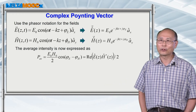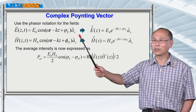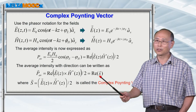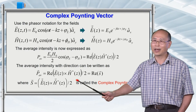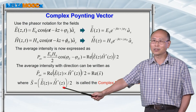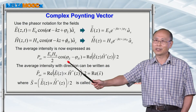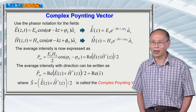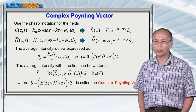For electromagnetic radiation, the propagation direction of energy is also important. We therefore define the complex Poynting vector as one-half of the phasor of E crossed with the complex conjugate of the phasor of H. This complex Poynting vector simplifies calculation: taking its real part gives the average power, and since it is a vector cross product, it also tells you the direction of electromagnetic power propagation.